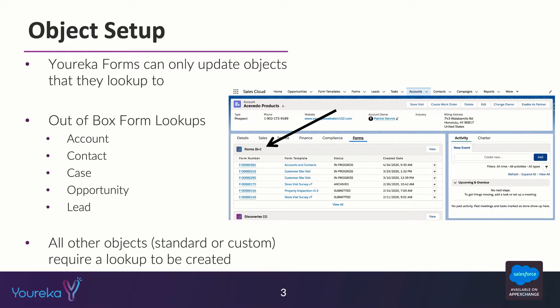This relationship is what allows us to make field links possible — it's what allows our Eureka forms to be able to update information on a particular account. Out of the box, we actually give you several different lookups so you can hit the ground running and start building field links right away, like account, contact, case, opportunity, and lead.